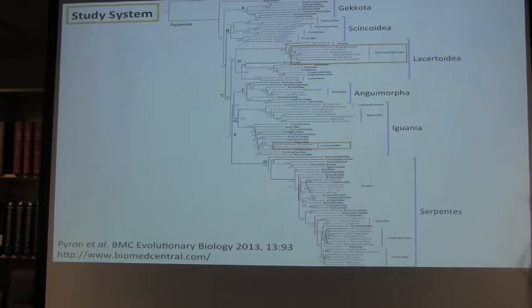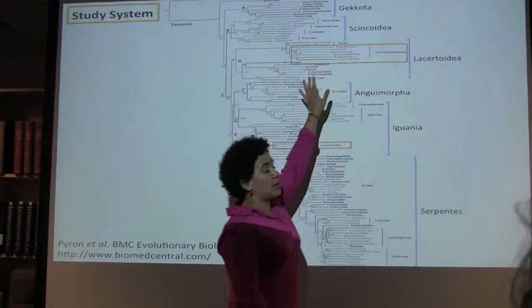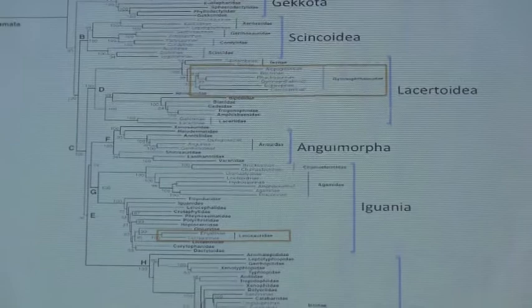Here's the squamate tree of life from a Pyron et al. paper, and I just want to point out that these two species are not closely related. Up there in Lacertoidea you have Leposoma, Gymnophtomidae, and down here in Iguania you have Eniallius. So I'm really sampling almost phylogenetically independent species in this study.